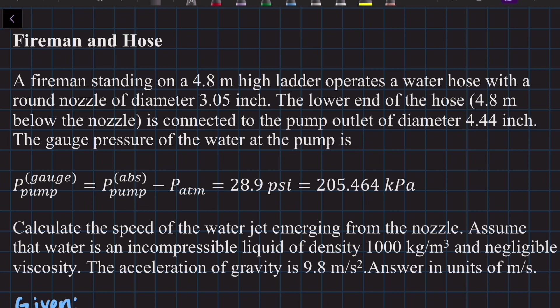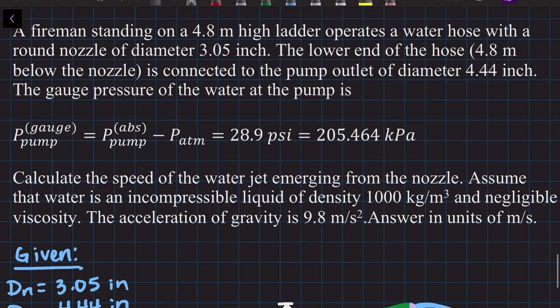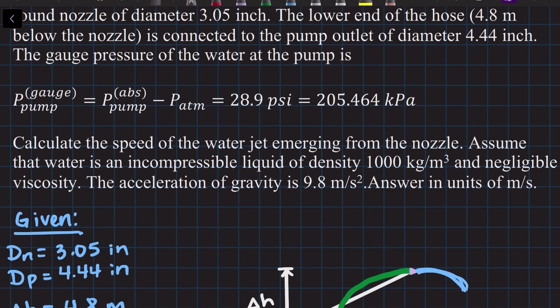Let's get right to it. A fireman standing on the 4.8 meter high ladder operates a water hose with a round nozzle of diameter 3.05 inches. The lower end of the hose 4.8 meters below the nozzle is connected to the pump outlet of diameter 4.4 inches. The gauge pressure of the water at the pump is 205.464 kilopascals. Calculate the speed of the water jet emerging from the nozzle. Assume that the water is an incompressible liquid of density 1000 kilograms per meter cubed and negligible viscosity. The acceleration of gravity is 9.8 meters per second squared. Answer in units of meters per second.